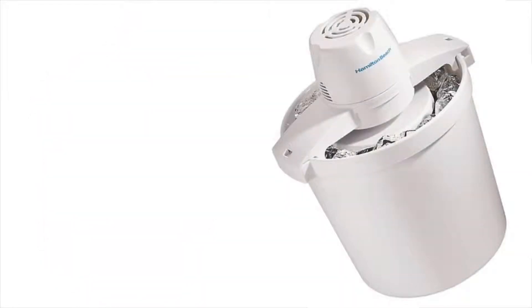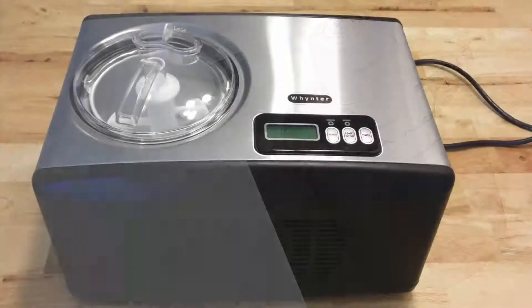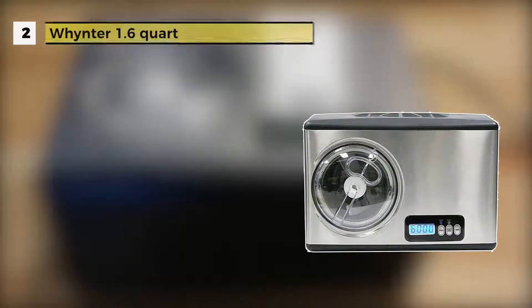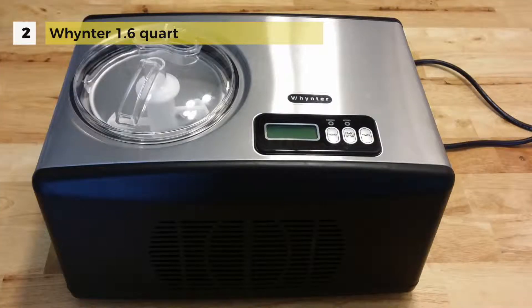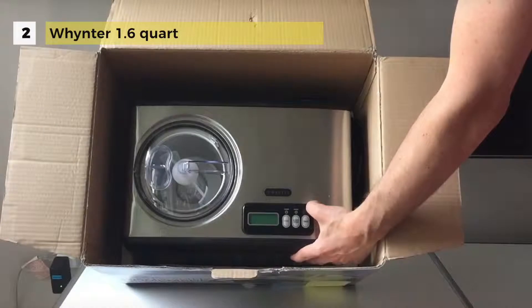Second place is the Whynter 1.6 quart ice cream maker. It lets you make a spread of delectable desserts in about 30 to 40 minutes. The gorgeous stainless steel exterior and soft touch LCD control panel will make this your favorite kitchen electric.